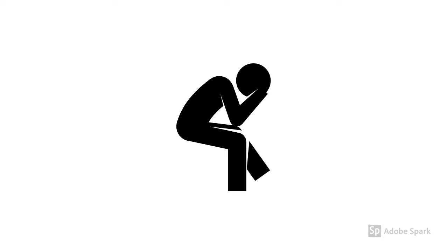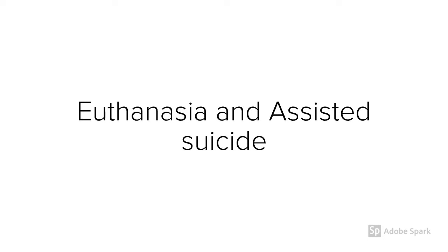Euthanasia and assisted suicide are two processes designed to end the suffering of those in chronic pain by ending their life or helping them to do so. In this video I will provide you with a definition of both euthanasia and assisted suicide, showing you how they are similar and how they are different.